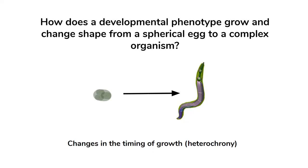I'm going to start with a question: how does a developmental phenotype grow and change shape from a spherical egg to a complex organism? We are using the C. elegans model organism to look at this problem. We have a very early stage egg and it transforms into this adult phenotype. In this and many other cases, it boils down to changes in the timing of growth — something we call heterochrony. In this presentation, we're going to talk about how to put some mathematical flesh on the bones of that idea.